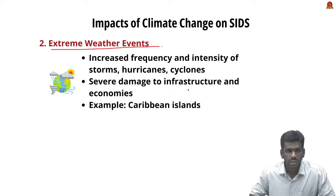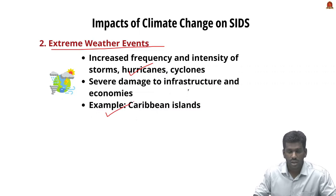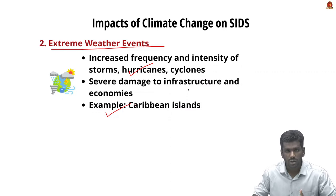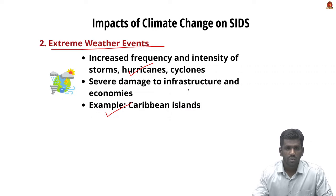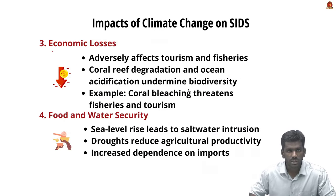For example, the Maldives (Indian Ocean), Tuvalu, and Kiribati (Pacific Ocean) are at risk of losing large portions of their land to rising sea levels. The second major impact is extreme weather events — increased frequency and intensity of storms, hurricanes, and cyclones can severely damage the infrastructure and economies of small island states. The Caribbean islands face annual hurricanes resulting in significant loss of life and economic damage.